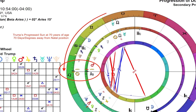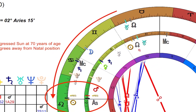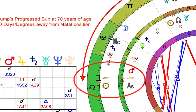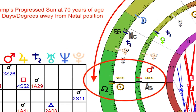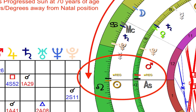Trump has his Sun in the 10th house — sidereal Taurus, tropical Gemini — and it's about 70 degrees away from his ascendant. His ascendant is on the cusp of the 12th and 1st house, and his Sun is up in the 10th house. So 70 years into his life, in his progressions, his Sun has gradually moved 70 degrees and crossed over the point of his ascendant. And as you can see on the chart, this is his chart for when he was elected in November 2016 — born in 1946, so 70 years on.